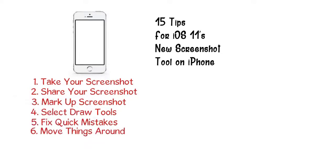If you drew your doodle in the wrong spot, you can use the dotted lasso tool to select the doodle in the image. After that, you can tap and move the specific doodle to where you want on the screen. Previously, you would just press and hold on a drawing to move it around in the photos app, which was actually easier.